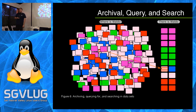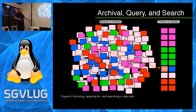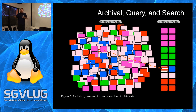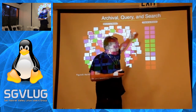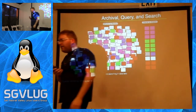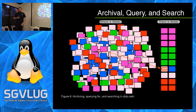The first thing data systems do is help us archive, query, and search through data. Without a data system, your data looks like a lot of really strange blocks — think of trying to find Waldo. Of course Waldo is the red and white striped block, but it's very difficult to spot. However, when you organize data in a regimented way, it's very easy to find what you're looking for. Data systems help you organize all that data on your disks so it's quickly accessible, queryable, and searchable.